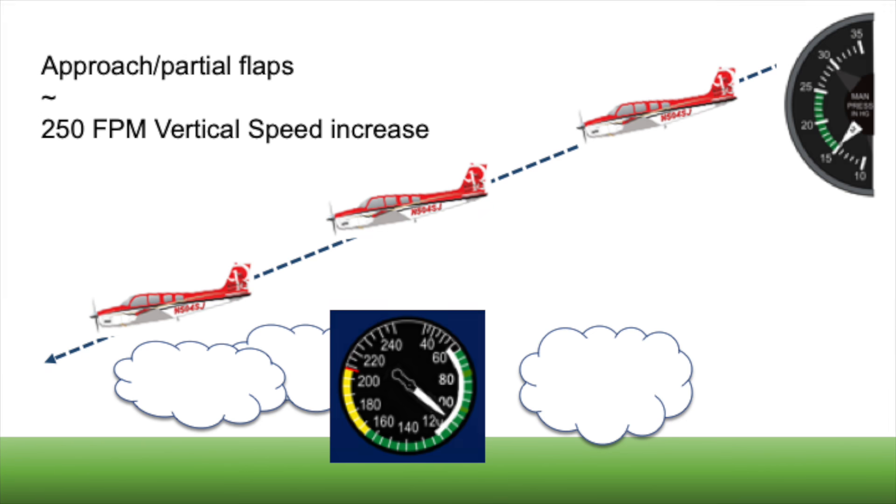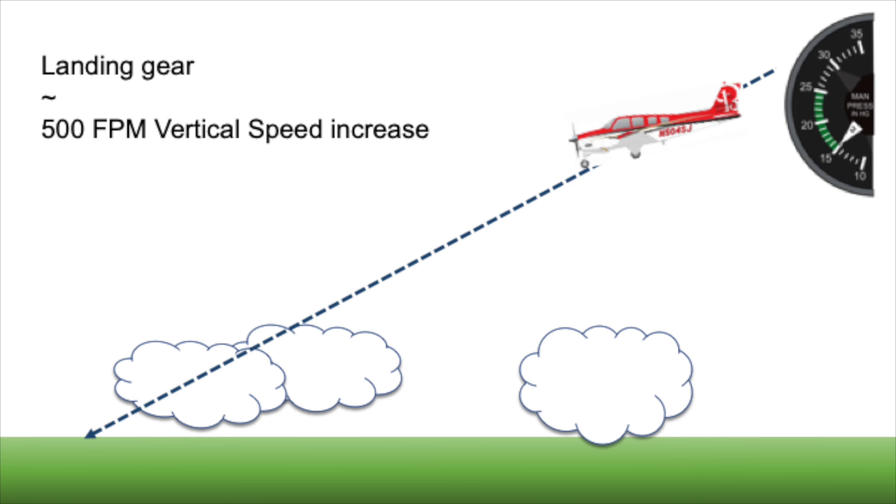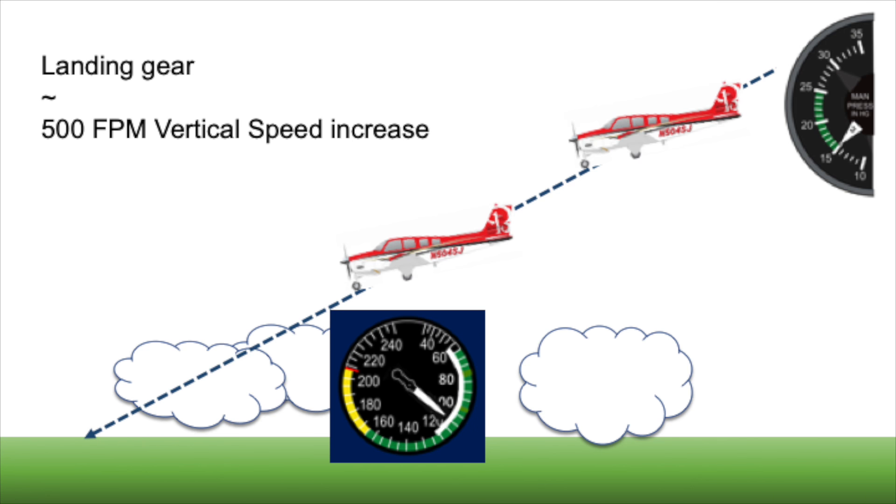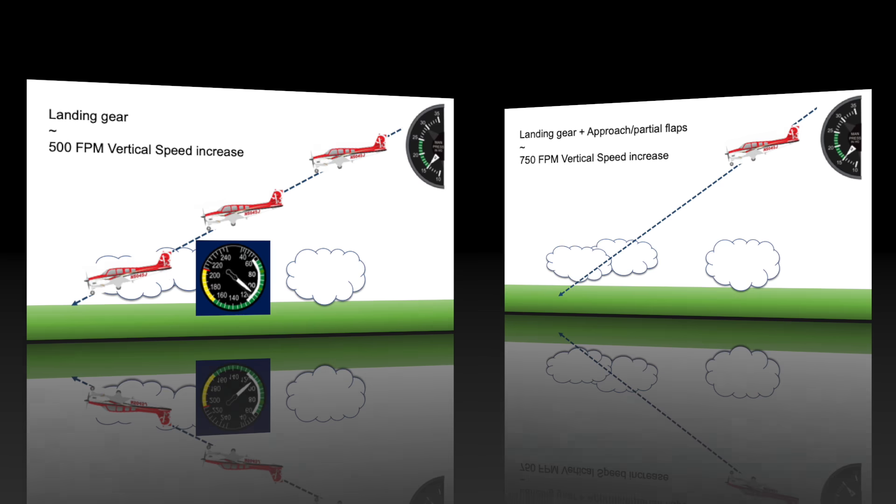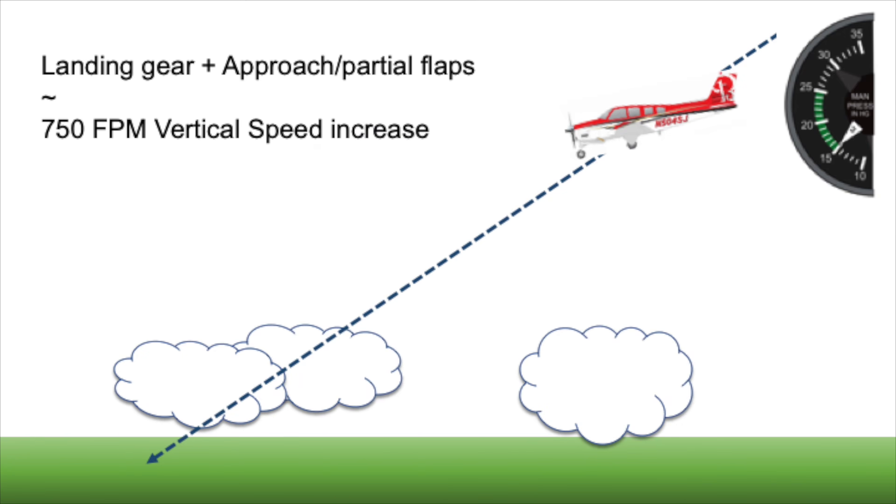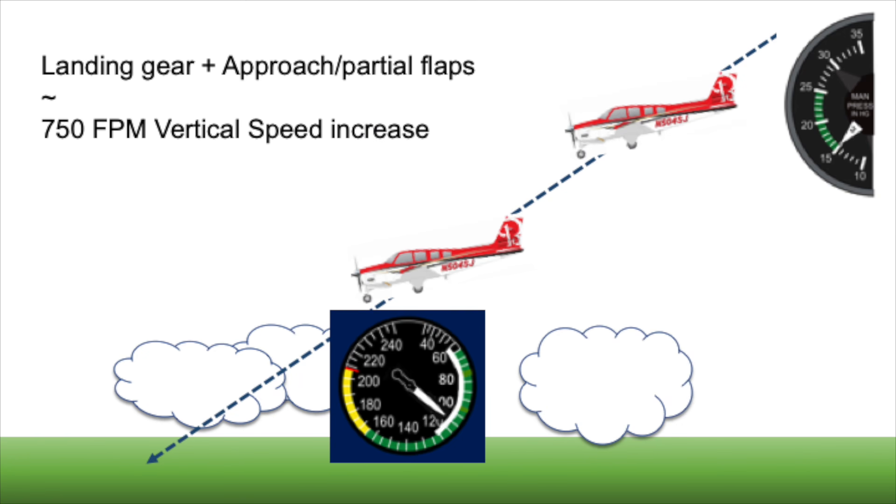In all but the earliest Bonanzas that have comparatively low gear extension speeds, extending the landing gear will add approximately 500 feet per minute to the descent rate. And if you have the option of gear and flaps both, extending both will add roughly 750 feet per minute to the descent rate, if you need a very steep descent angle.